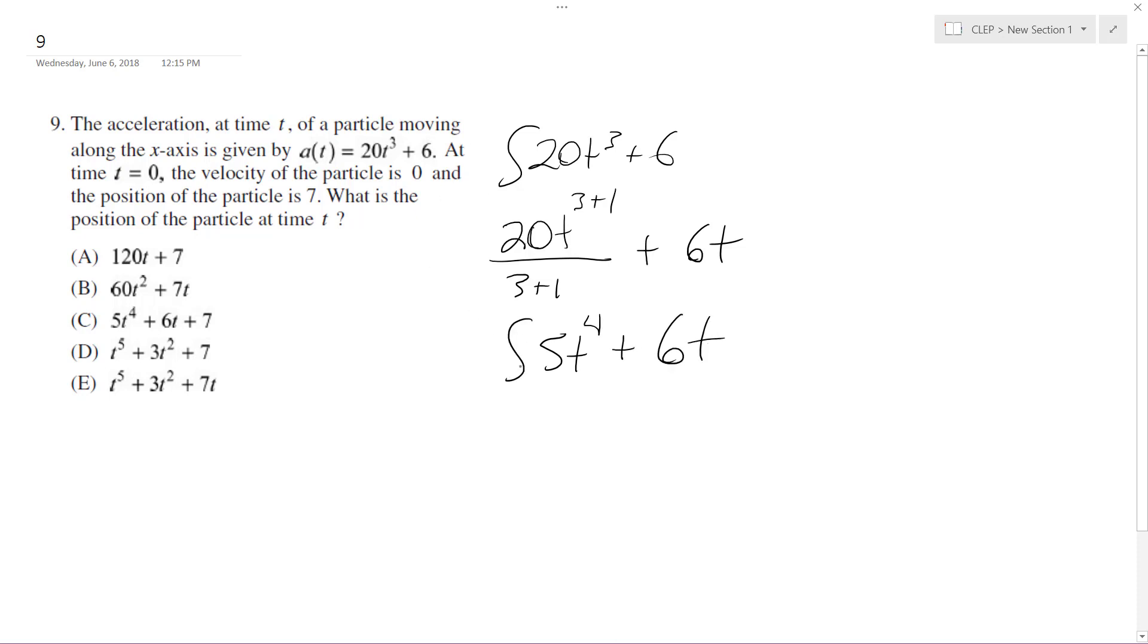Now we integrate one more time for position. They tell us the position of the particle is 7. So this equals 5t^(4+1)/(4+1) + 6t^(1+1)/2 + c.